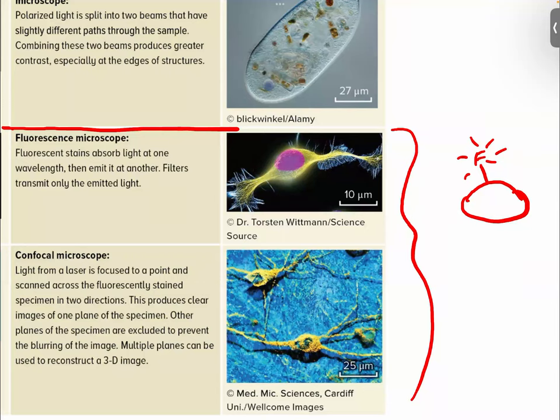If we take the idea of focusing scattered light to its extreme, the ultimate source of focused light is a laser. A laser is basically a stream of photons, giving you titanic resolution. Here you can see the same neurons stained the same way, but instead of a UV lamp, a laser beam of UV radiation is used — and you can see the incredible clarity it provides. This is called confocal microscopy.